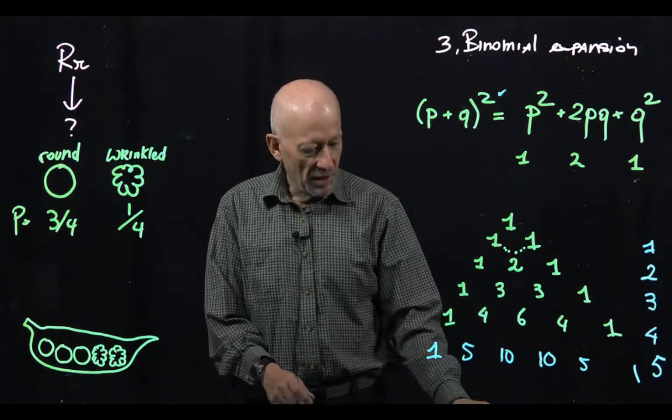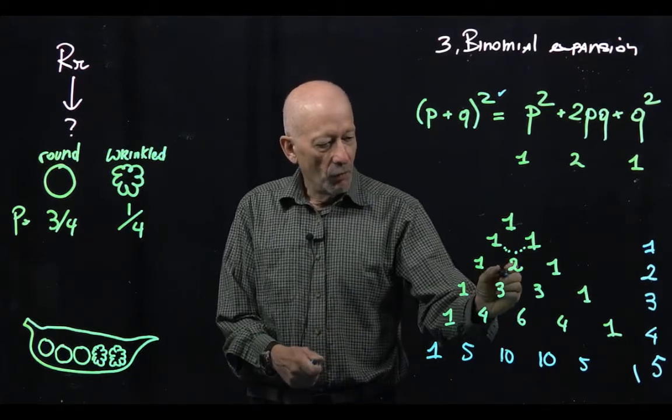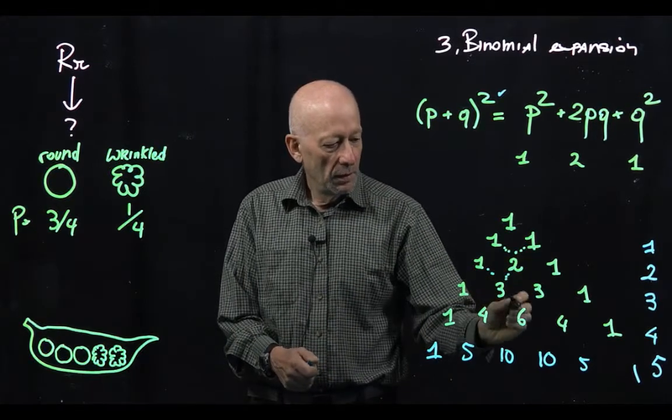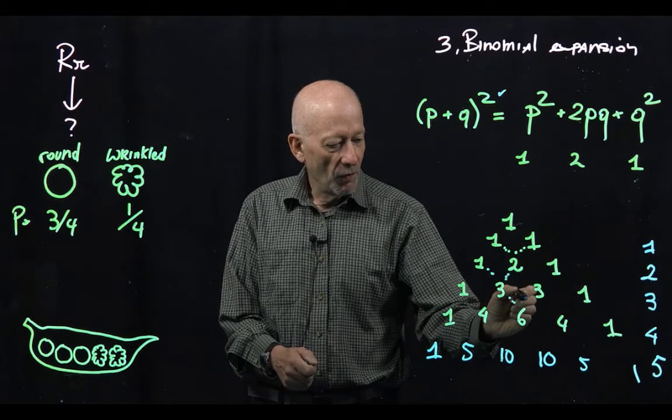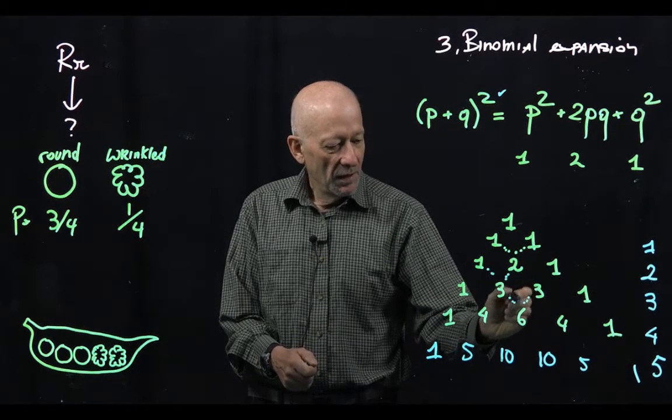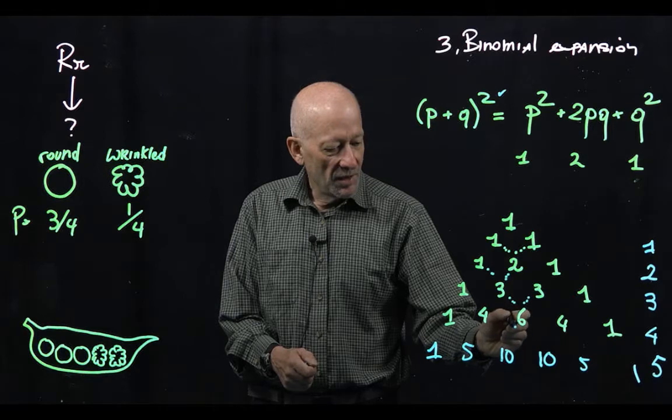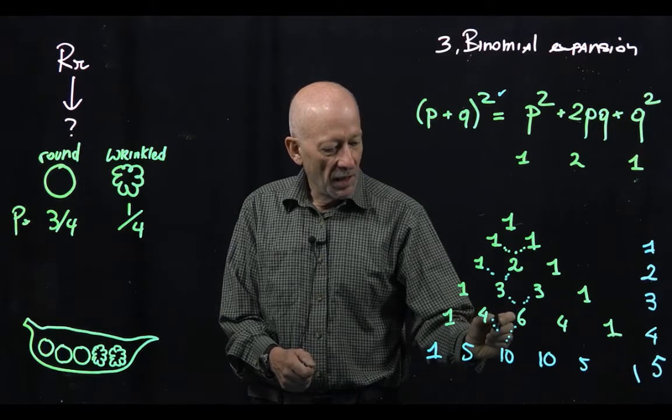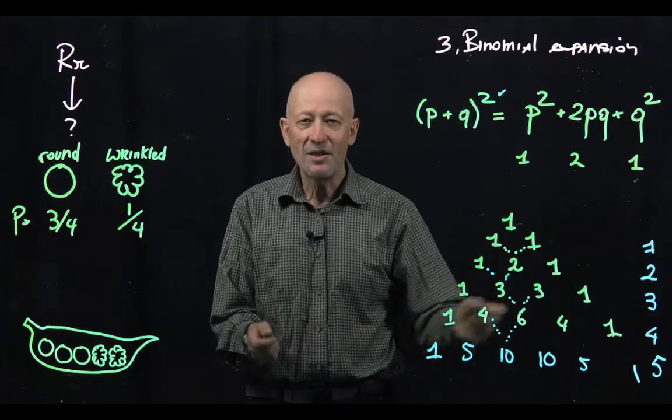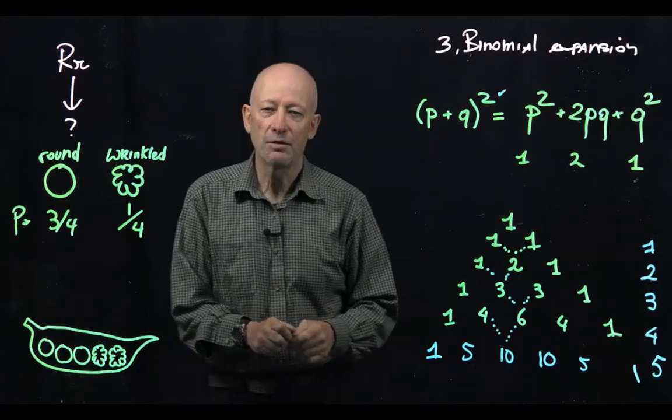For example, this 3 is the sum of 2 and 1. This 6 is the sum of 3 and 3. This 10 is the sum of 6 and 4. So it's pretty easy to build a triangle. It takes two seconds.